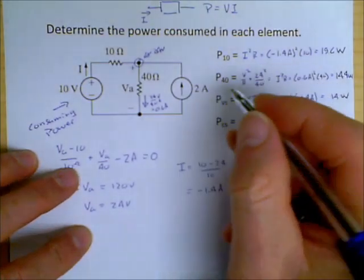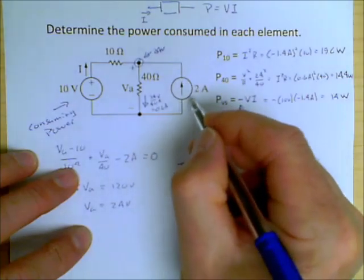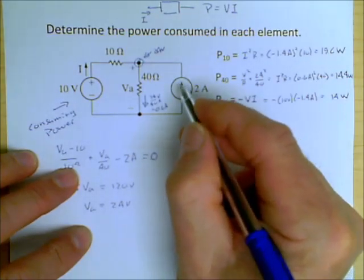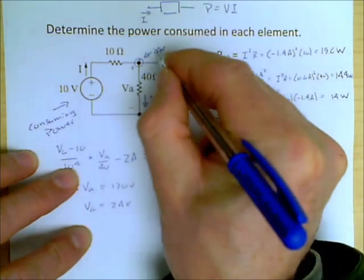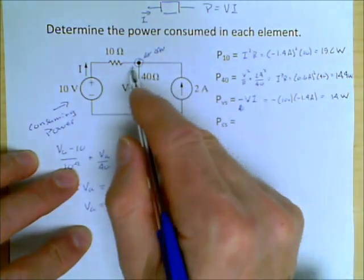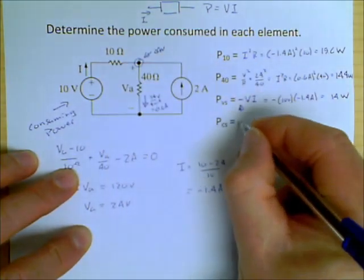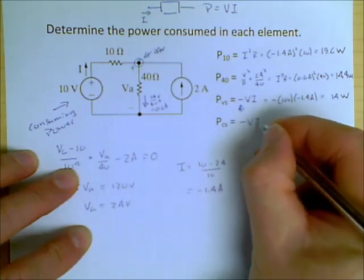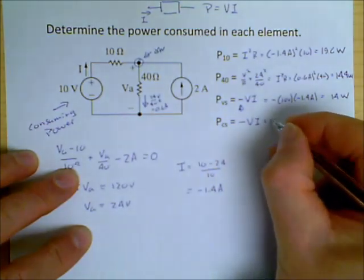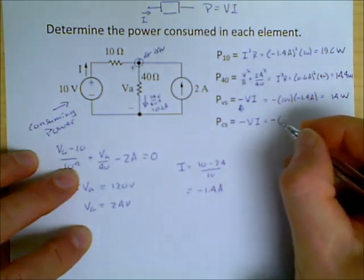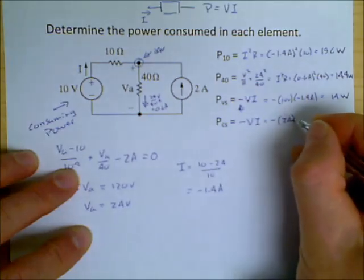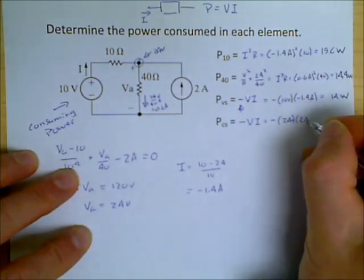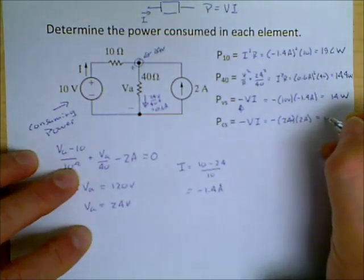Now let's look at the other current source. The other source is this current source over here. And we recognize that when we solve for VA, it was 24 volts with plus on the top. So therefore this current leaves the plus terminal. And so therefore we have to define it as minus V times I. In this particular case it's minus. The V is 24 volts. The I is 2 amps. And so therefore this becomes minus 48 watts.